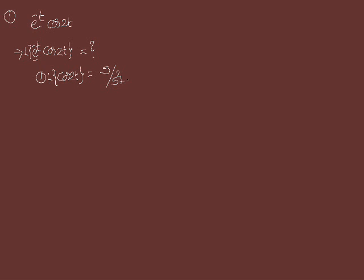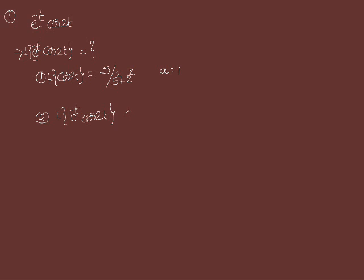Laplace of cos(2t) is s/(s² + 2²). Since we have e^(-t), that means e^(-at) where a = 1, so we replace s with s + 1. Therefore, Laplace of e^(-t)·cos(2t) = (s + 1)/((s + 1)² + 4). This is the final answer.